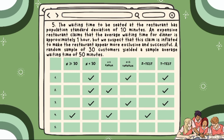Number 5: The waiting time to be seated at the restaurant has a population standard deviation of 10 minutes. An expensive restaurant claims that the average waiting time for dinner is approximately 1 hour. But we suspect that this claim is inflated to make the restaurant appear more exclusive and successful. A random sample of 30 customers yielded a sample average waiting time of 50 minutes. Answer: Our N is equal to 30. The sample standard deviation is known based on the given. The N is 30 which is equal to 30. Based on the given situation, the test statistic that we are going to apply is the T-test.